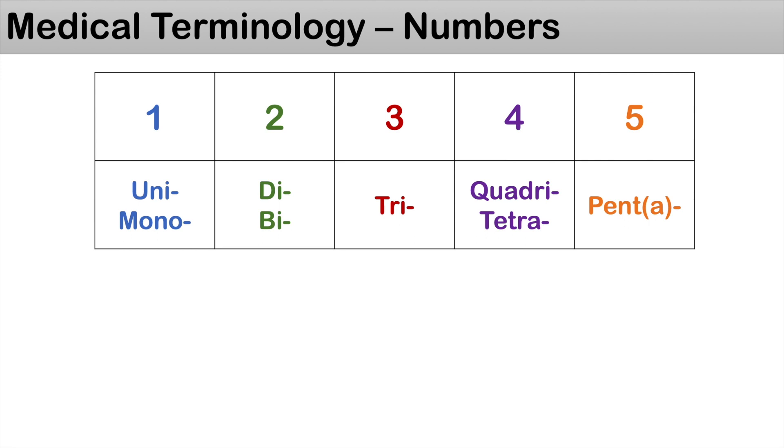We're going to first start talking about the numbers one through five. All numbers are denoted by prefixes. The number one is denoted by the prefixes uni or mono, so you can think of unicycle or monomer. For the number two, it's denoted by the prefixes di or bi, so you can think of bilobular.